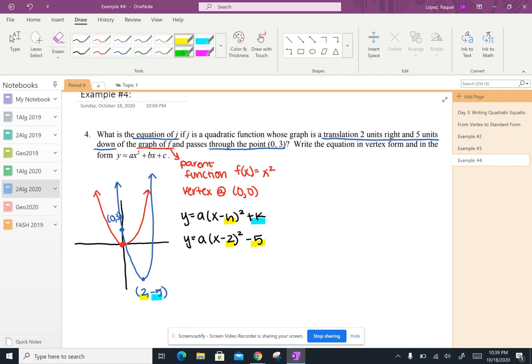The next thing I want to do is substitute in the values of zero comma three in for x and y, because what I want to do is figure out what that stretch of the blue graph should be. To do that, I need two points. So I've got the vertex and I've got another point. I know the point zero comma three is on the graph because that's what they told us. So I'm going to plug in zero in for x and I'm going to plug in three in for y.